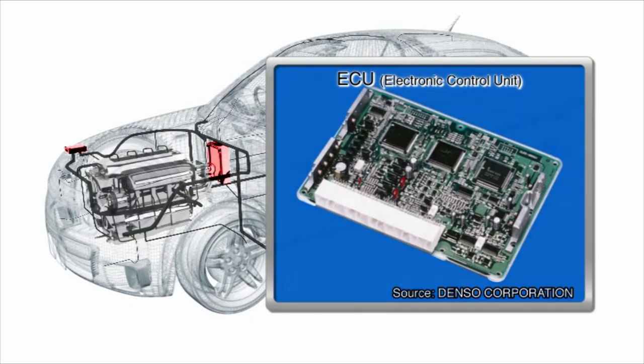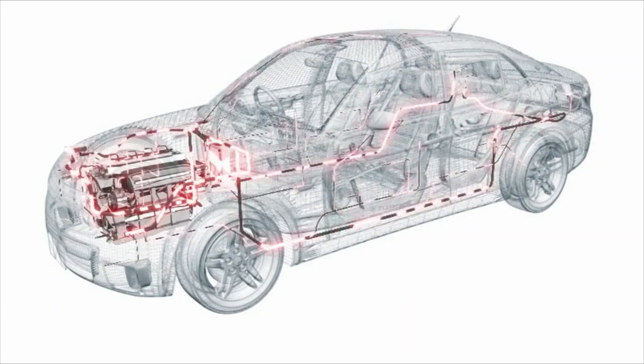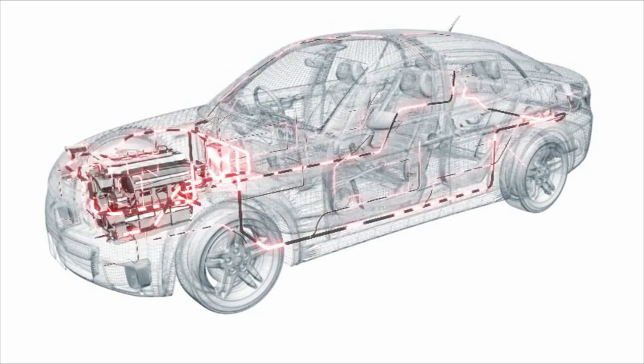The ECU receives information from a variety of sensors. The sensors are bound together in a wiring harness that reaches 2,000 to 3,000 meters in total length.